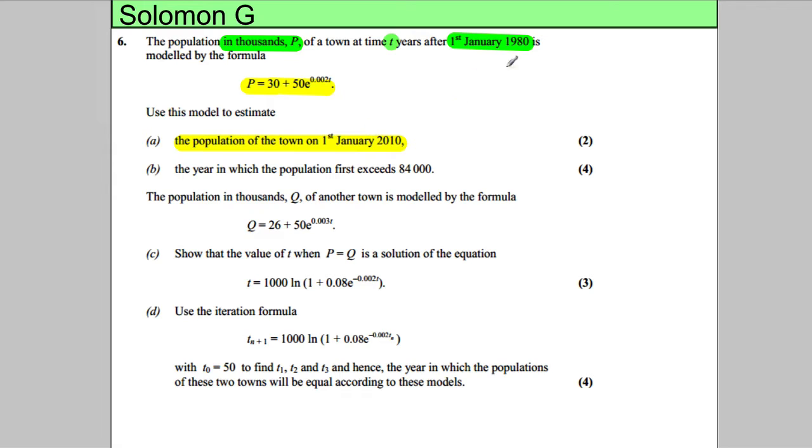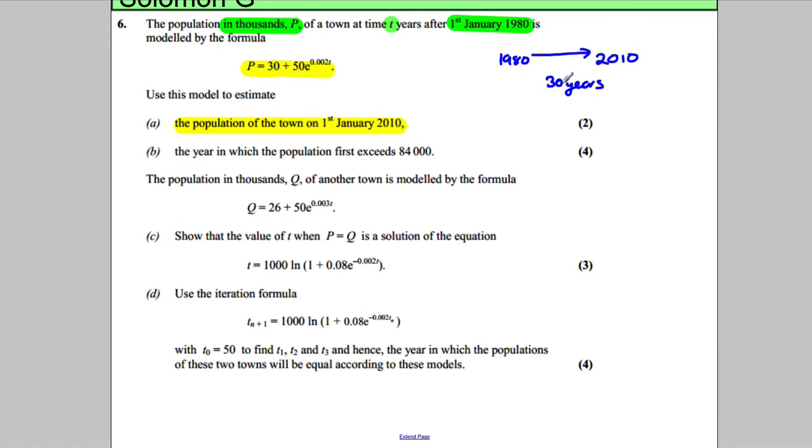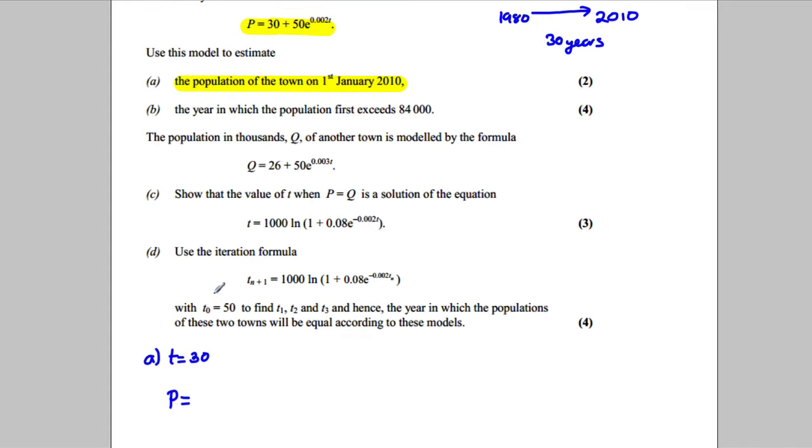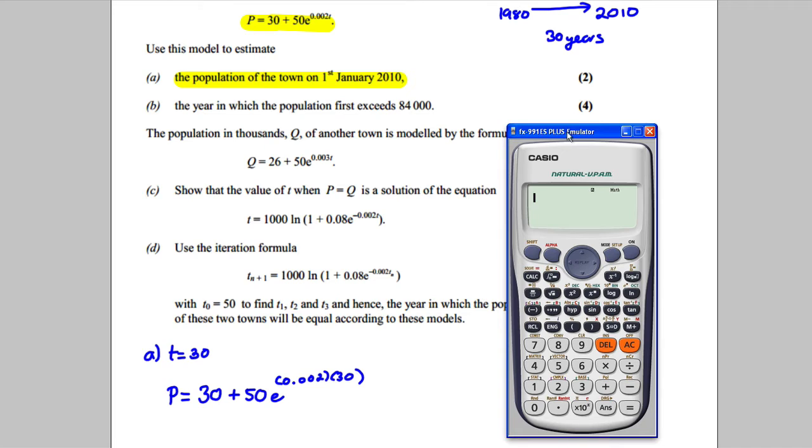The question is how many years between these two, so you're going from 1980 and you're going up to 2010, so clearly this is 30 years. We're going to state from part A that T is equal to 30 and we're just going to substitute that in. So P is going to be equal to 30 plus 50 e to the power of 0.002 multiplied by T, which is equal to 30.